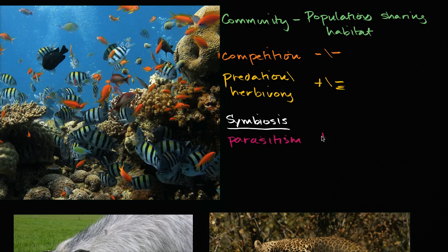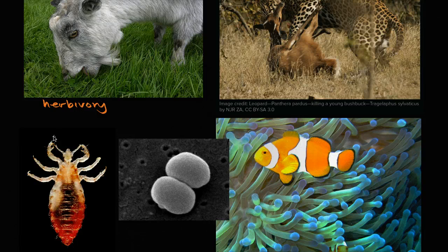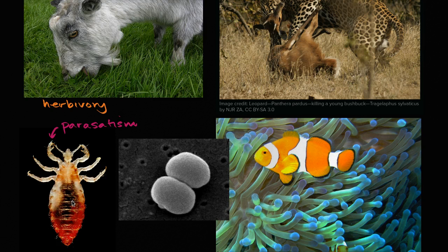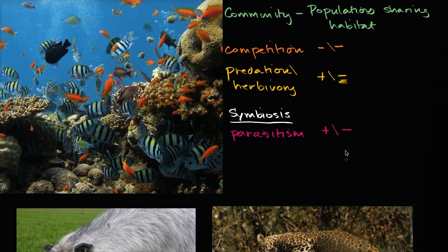Parasitism looks a lot like predation: the more the parasite benefits, the more of the host there is, but the host is actually hurt by the parasite. For example, a louse living in your hair is a parasite — it benefits by getting food from your scalp by sucking your blood, and can lay eggs in your hair. But it's negative for you: it makes you itchy, it takes your blood, and it's uncomfortable. So parasitism is good for the parasite but not good for the host.